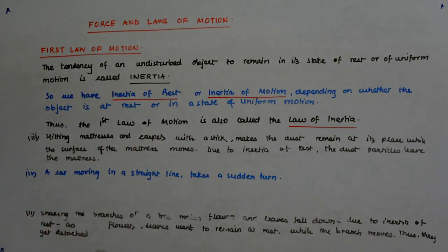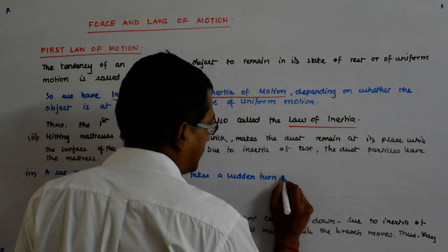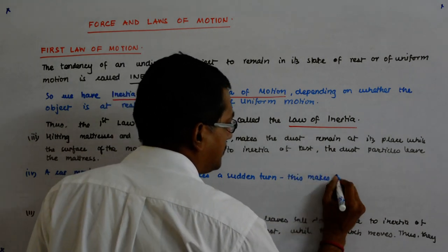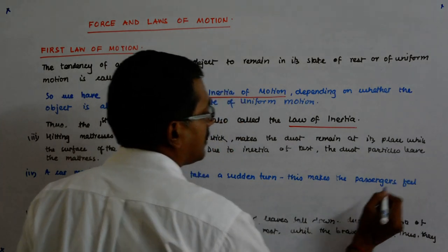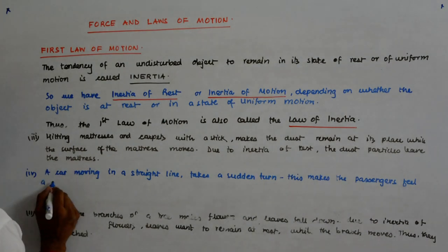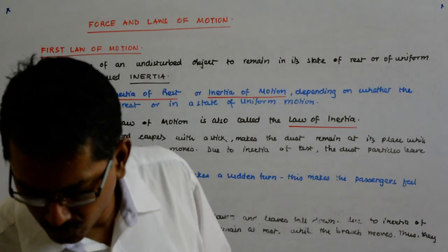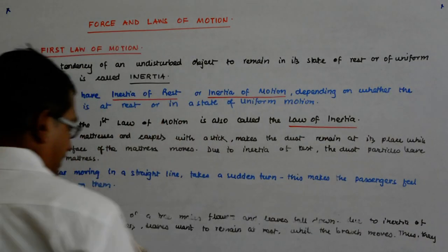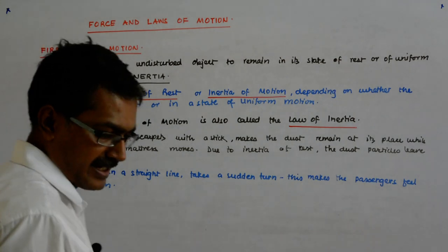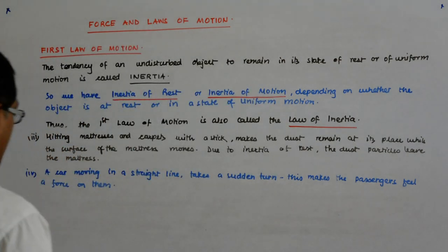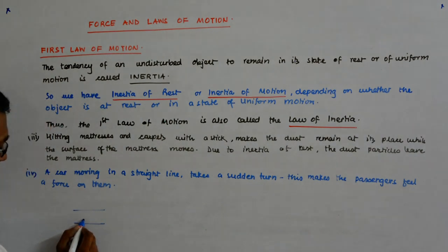So a car moving in a straight line takes a sudden turn. This makes the passengers feel a force on them. Let me explain that. This is a car and I am showing the top view, and there is a passenger sitting here.